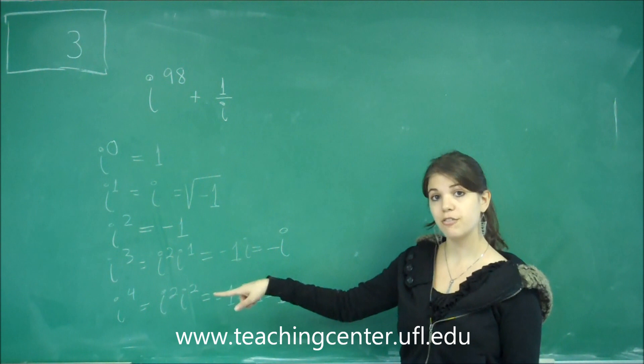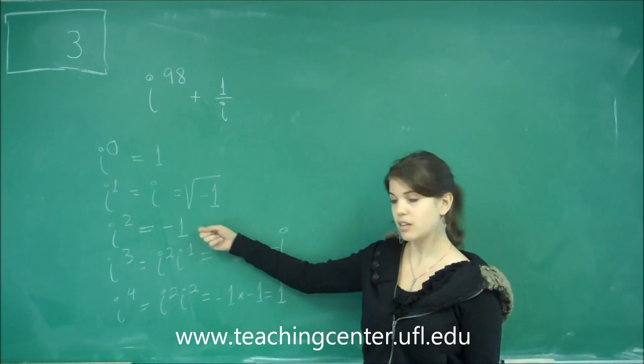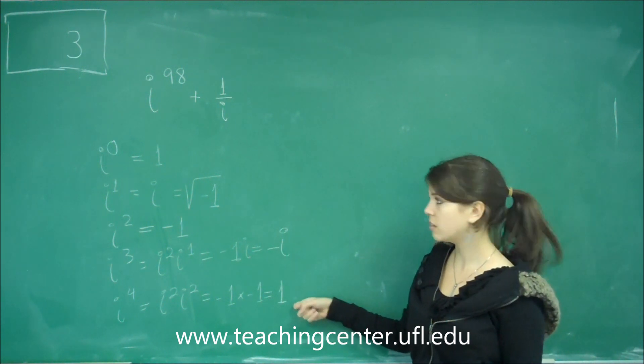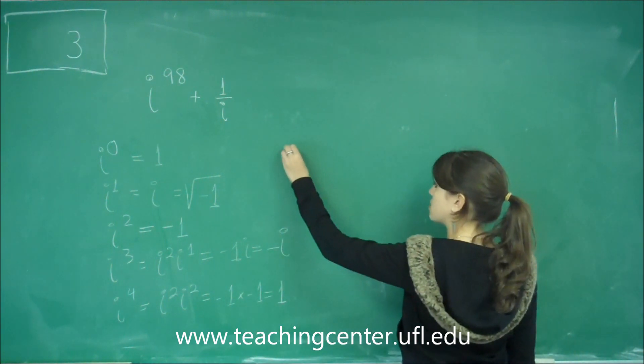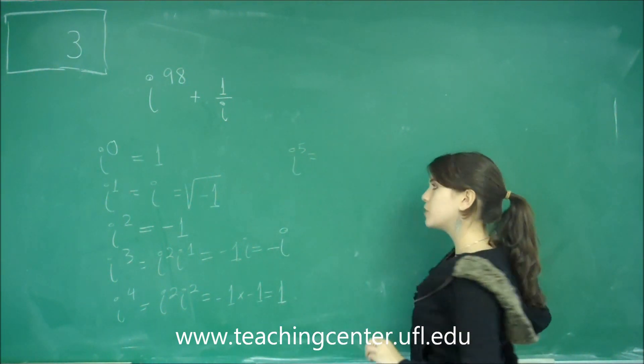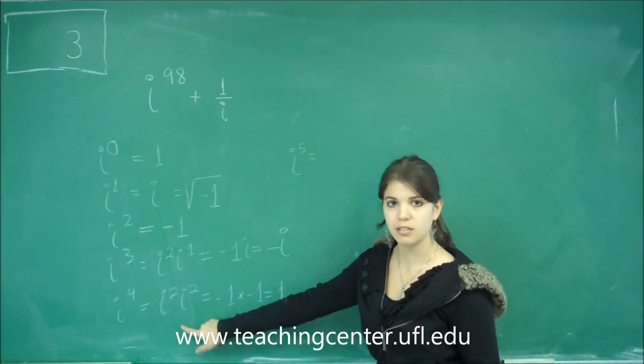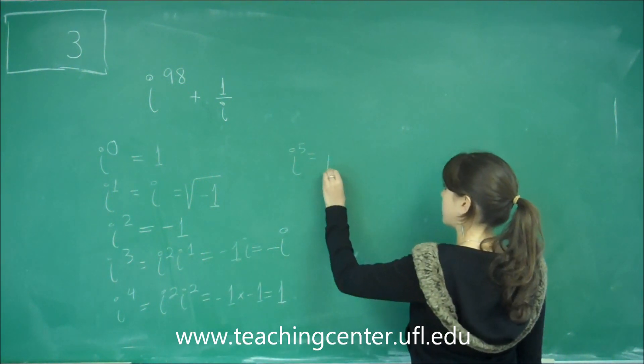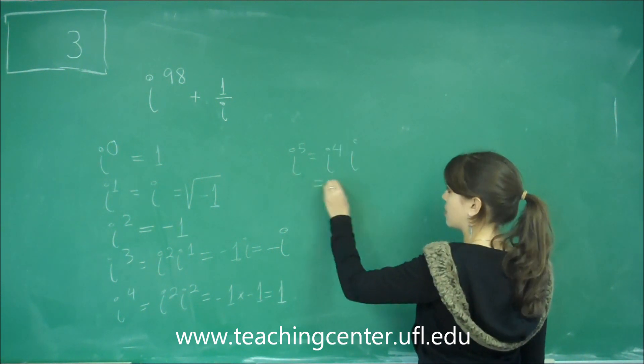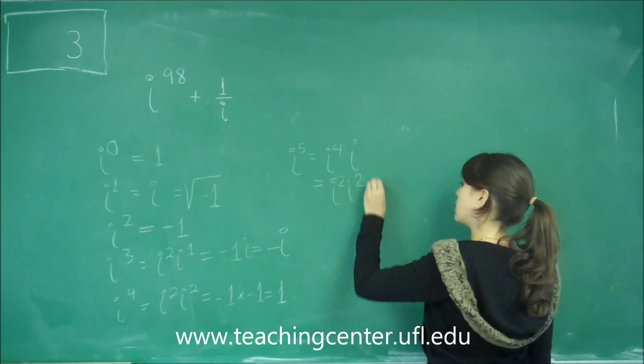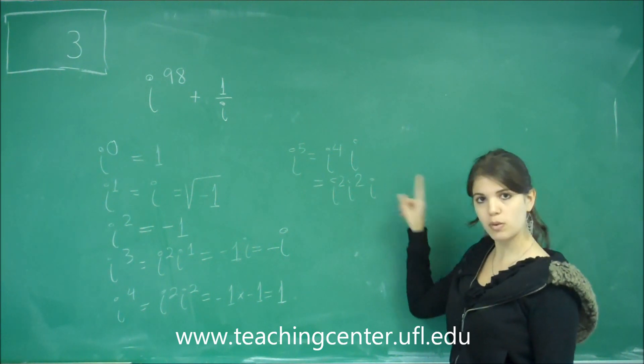When we go to i to the 5th, the answer we get is back to i. This would be i to the 6th, 7th, 8th, 9th, 10th, and so on and so forth. For example, let's do i to the 5th to prove that. So the way we would do this, since it's a very low number, we could work it the same way that we worked these. So we could separate that into i the 4th times i.